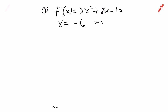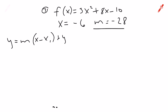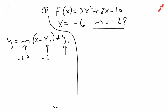They tell us that our slope is negative 28. Because they give us the slope, we don't have all that much to do. Just like the last problem, they want us to write the equation of the tangent line, so we use y equals m times the quantity x minus x1, plus y1. We need m, x, and y. They give us m equals negative 28 and x equals negative 6, so the only thing missing is y1.